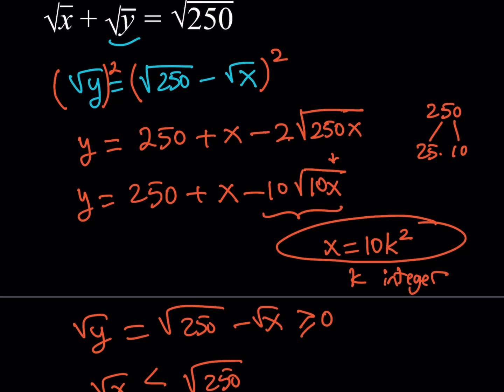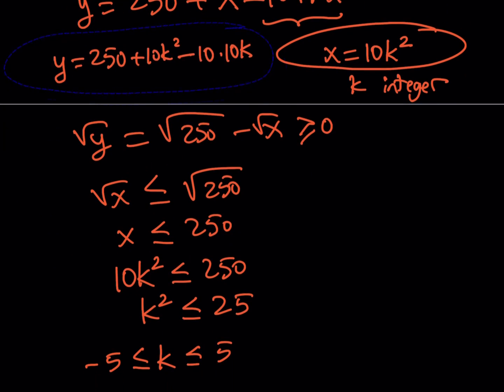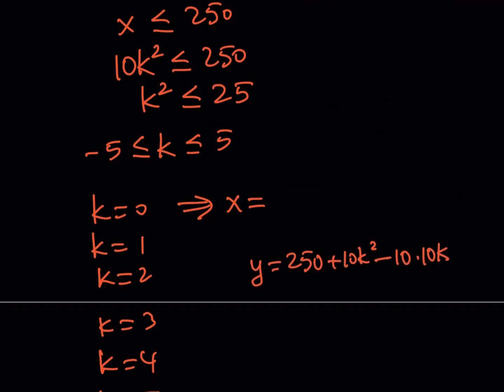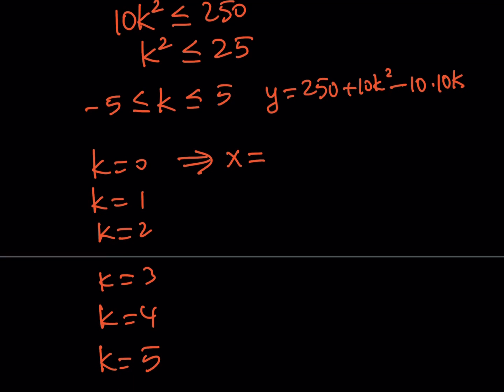Or you're going to use the modified equation when you replace x with 10k squared. Let's see what happens here. For example if you do the math here you're going to be getting 250 plus 10k squared minus 10 times the square root of 100k squared which is going to come out as 10k, so basically this is going to be the y value. So if you go ahead and take that for example while finding our y values we could definitely use that as an equation.